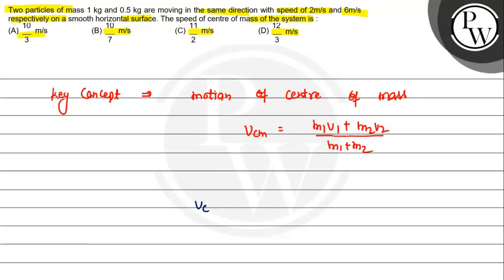Let's substitute the values. Vcm = (M1 × V1 + M2 × V2) / (M1 + M2). Taking M1 = 1 kg with velocity 2 m/s, and M2 = 0.5 kg with velocity 6 m/s, we get: (1 × 2 + 0.5 × 6) / (1 + 0.5) = (2 + 3) / 1.5.